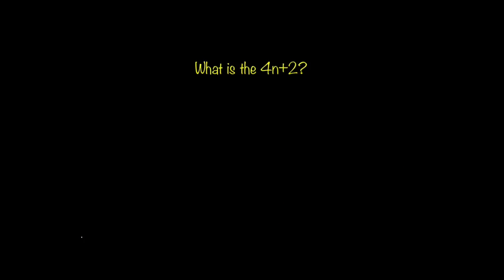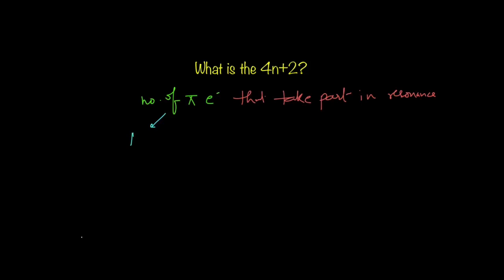What is this 4n+2? It's just a number, and it represents the number of pi electrons that take part in resonance. So what are these pi electrons? These are the electrons in the pi bonds as well as the lone pairs. But you don't have to count each and every lone pair — you only count those electrons that are taking part in resonance.